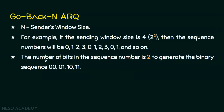The number of bits in the sequence number is 2, which generates the binary sequence 00, 01, 10, and 11 — with decimal equivalents 0, 1, 2, and 3. We can reuse this sequence number as per our requirement based on the number of frames.